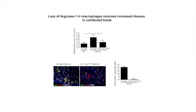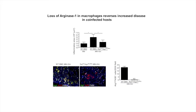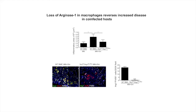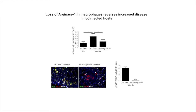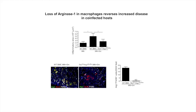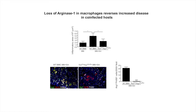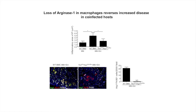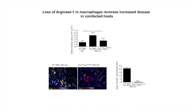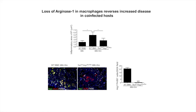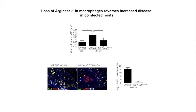Since we found increased expression of arginase-positive macrophages in the co-infected mice, we then addressed if depletion of arginase 1 in macrophages would specifically reverse disease severity in co-infected mice. We generated mice that were deficient in arginase expression in the lung macrophages and found that this not only resulted in decreased accumulation of arginase-positive macrophages in the lung, but also reversed disease severity in co-infected mice.